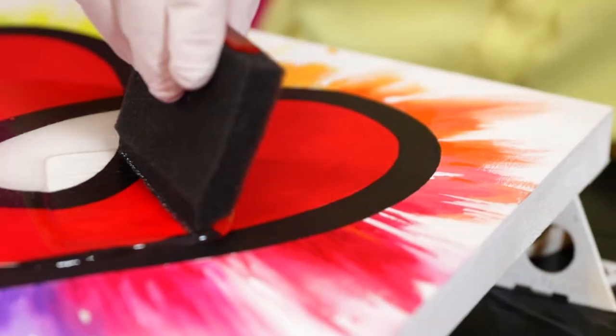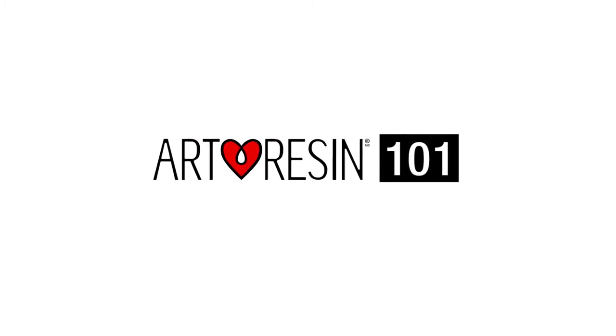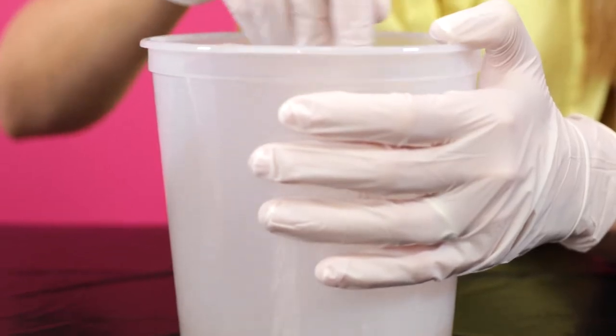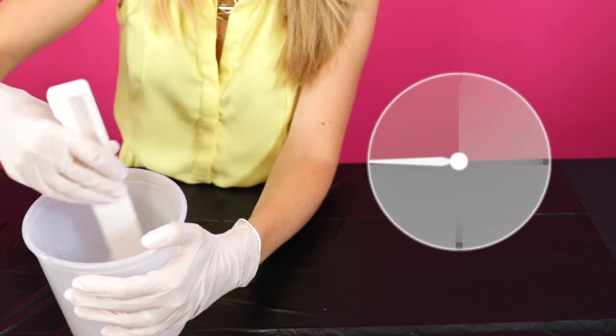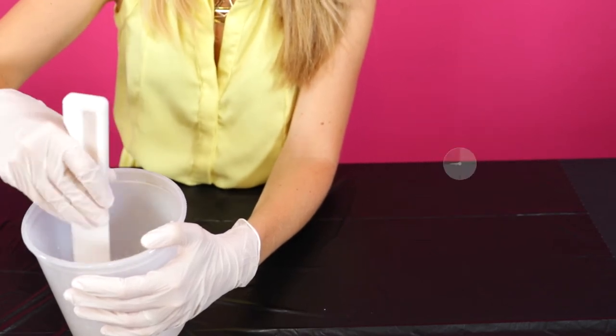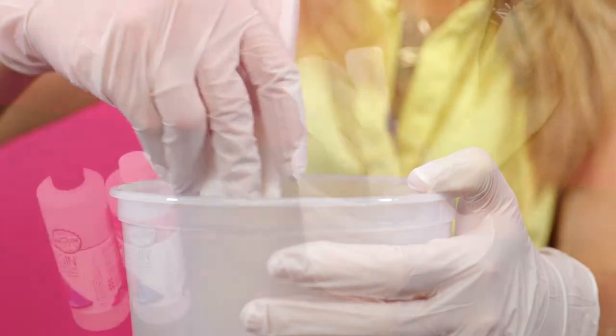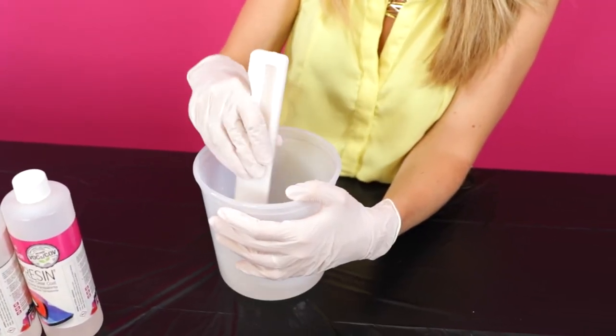In this video, we demonstrate how to pour and spread your art resin. Once you've mixed both the resin and hardener together, you'll have about 45 minutes of working time to spread it before it starts to cure. If your mixture is warmer than room temperature, your working time and cure time will be shortened.